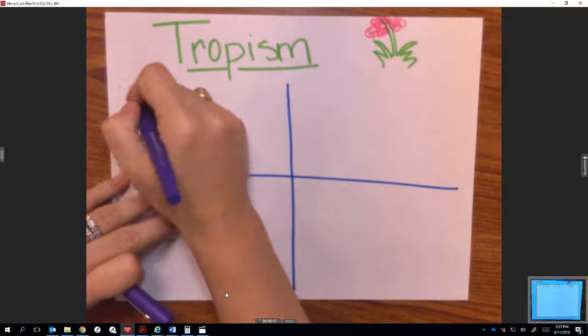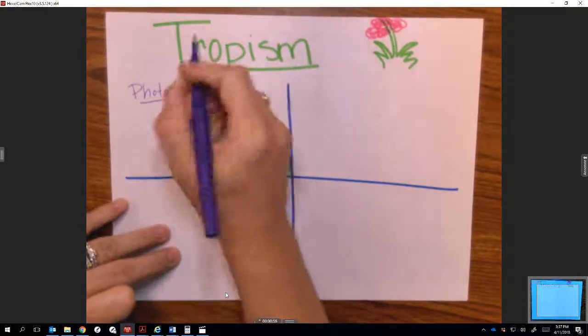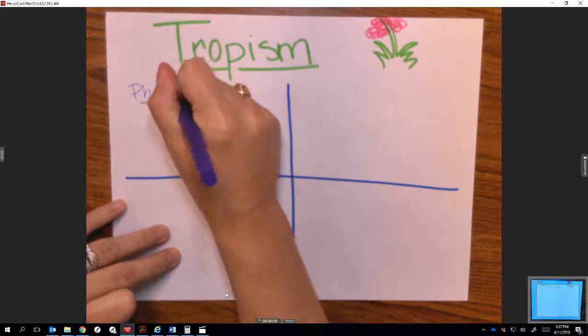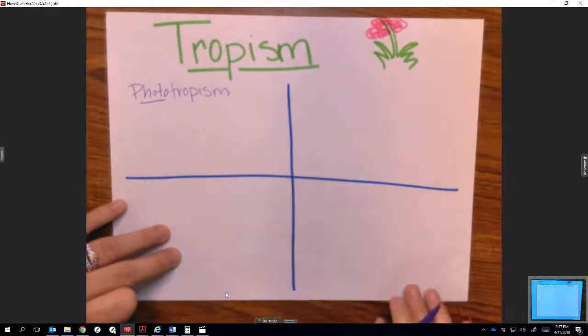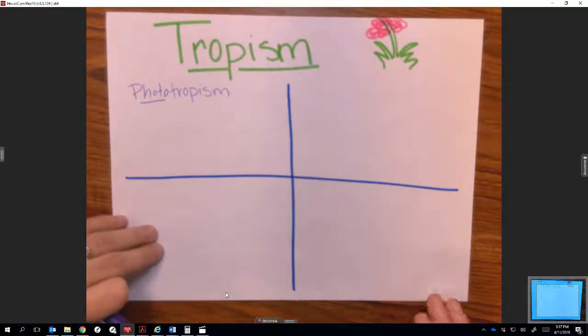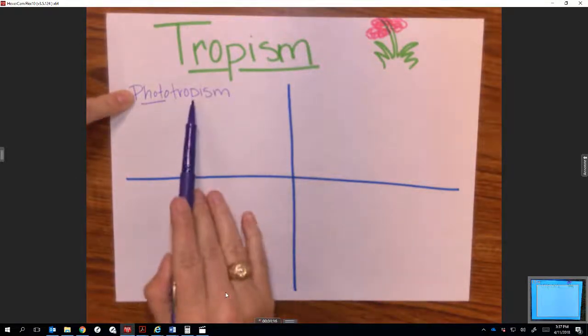Phototropism, if you look at the word, it starts with photo, and photo means light. A photograph is a picture taken with light. Photosynthesis means to use light to build something or put something together. What phototropism means here is how a plant is responding to light.